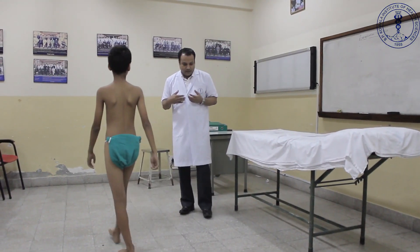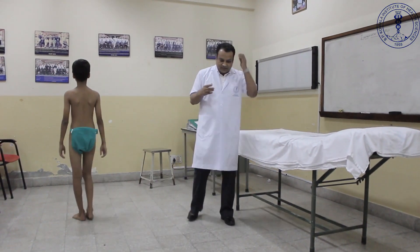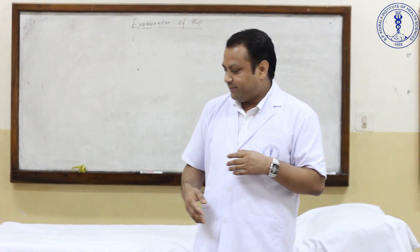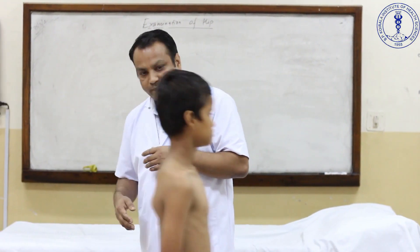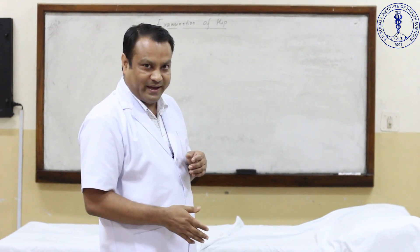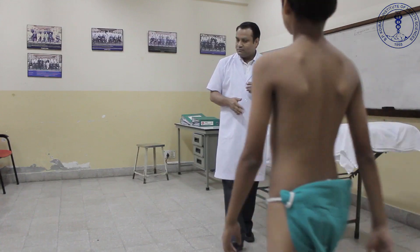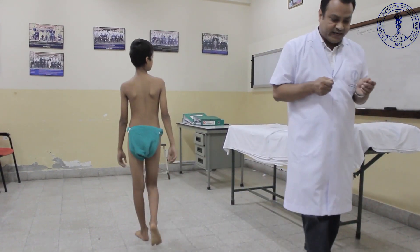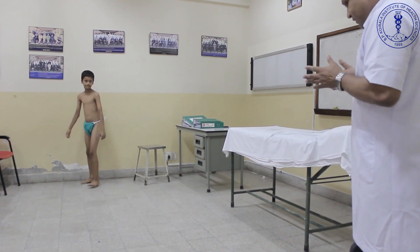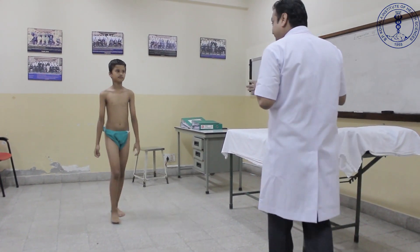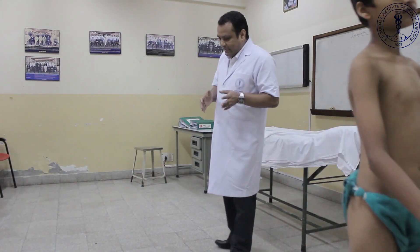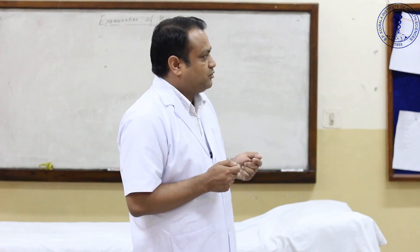Starting from top to bottom when viewing from the back, you should see the level of the shoulder, whether there is any deviation or curvature of the spine, then the level of the posterior superior iliac spine, wasting of the gluteal muscles, movement at the hip, and position of the knee and ankle.